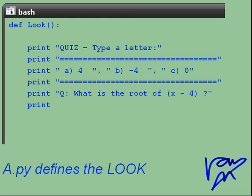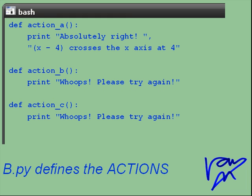A.py defines the look of the Python program. B.py defines the actions to be taken when the user provides an event.